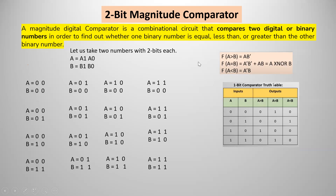A magnitude comparator is a combinational circuit that compares two numbers in order to find whether the two numbers are equal, or one number is less than another number, or one number is greater than another number.